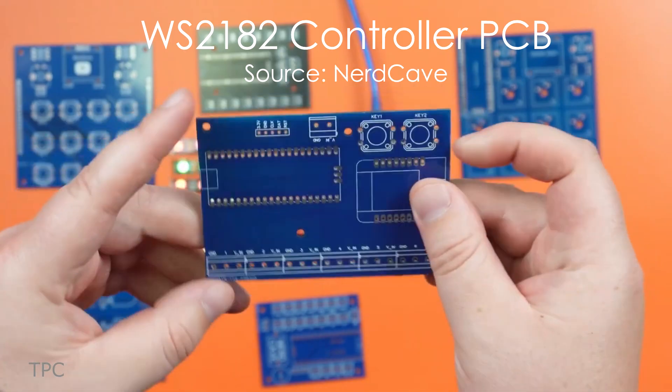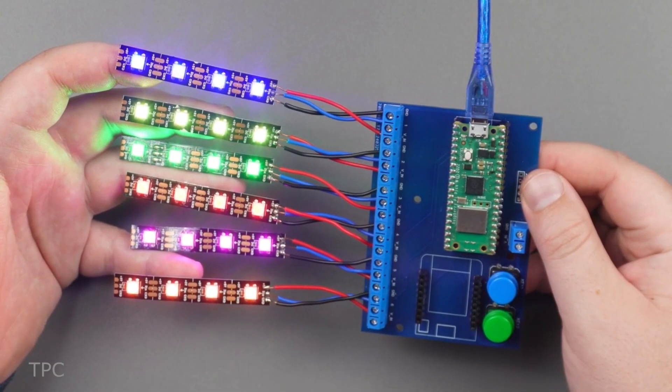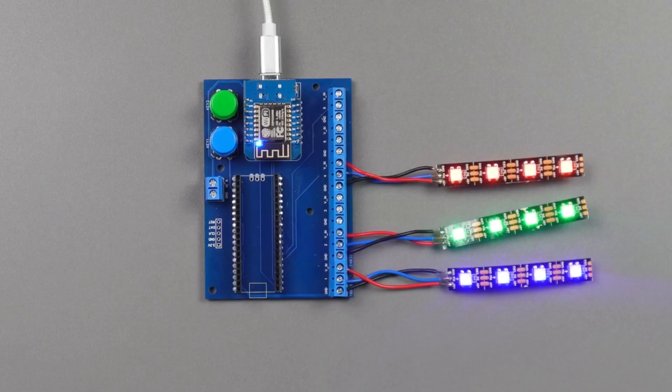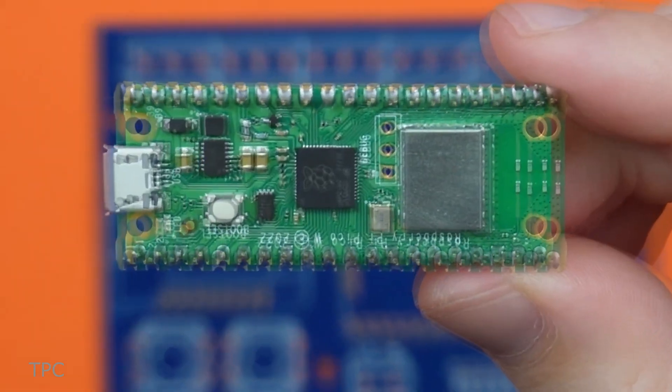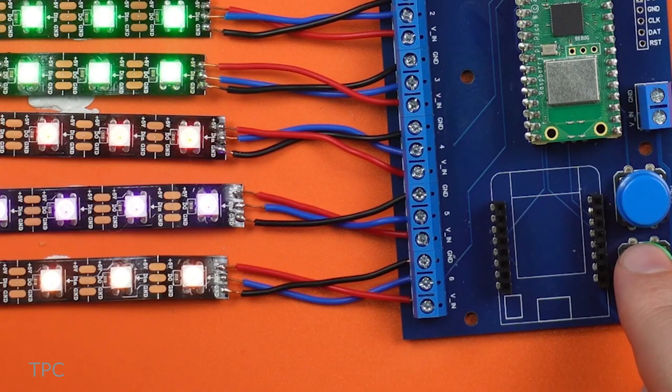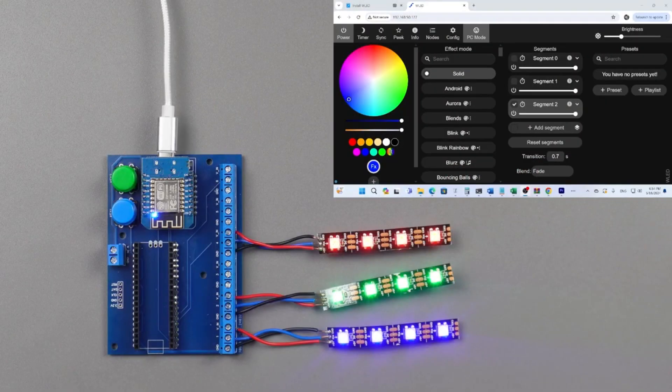Number 12. Nerd Cave designed a simple controller PCB to manage six different WS2812B LED strips using a Raspberry Pi Pico. An alternative control option with a Wemos D1 Mini or Pi Pico W is also available. The board includes two push buttons for adjusting LED colors, and if a Pico W or D1 Mini is used, the LEDs can be controlled via a web server.